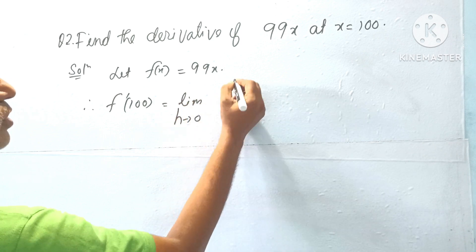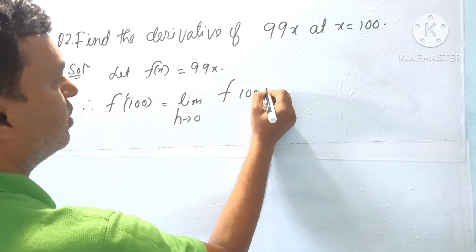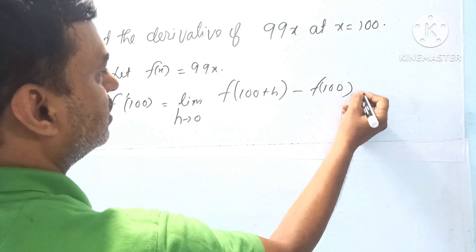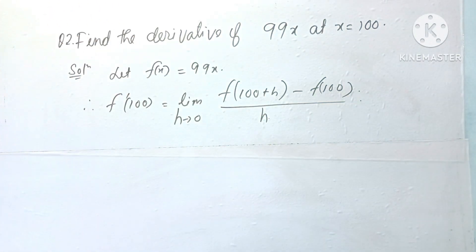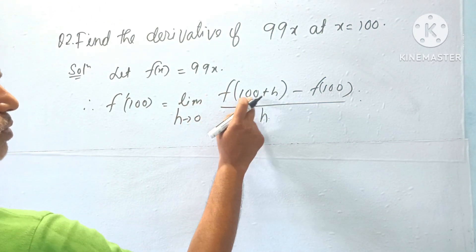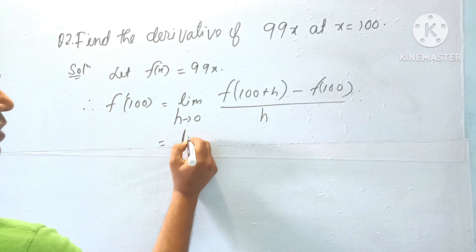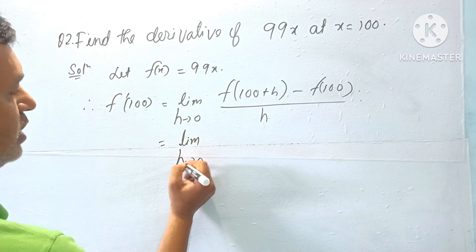f of 100 plus h minus f of 100 divided by h. This is the formula: f of a plus h minus f of a by h, limit h tends to 0.